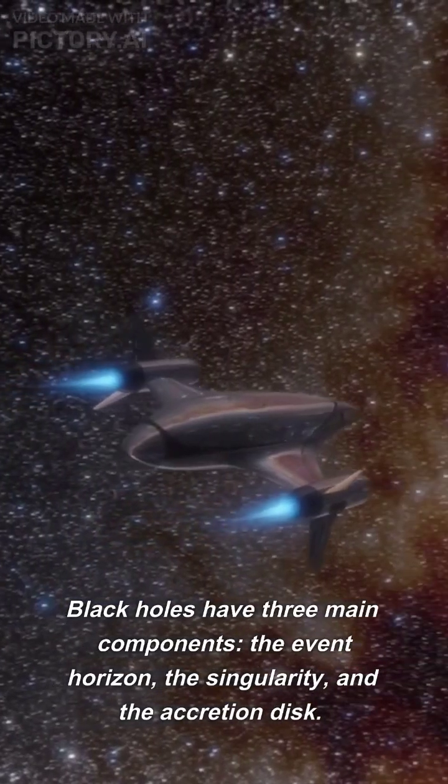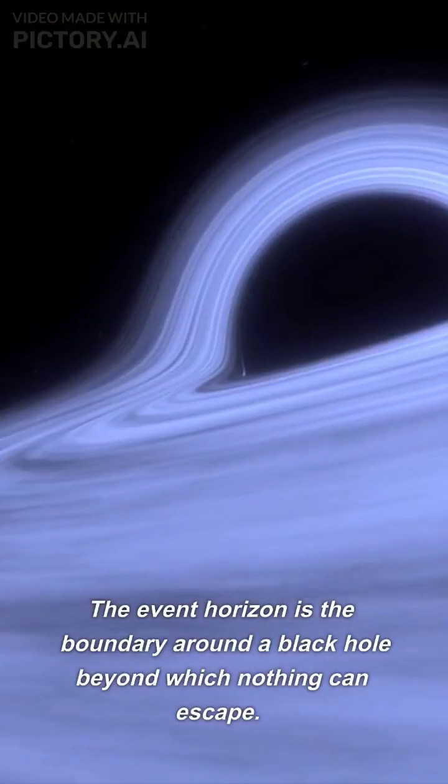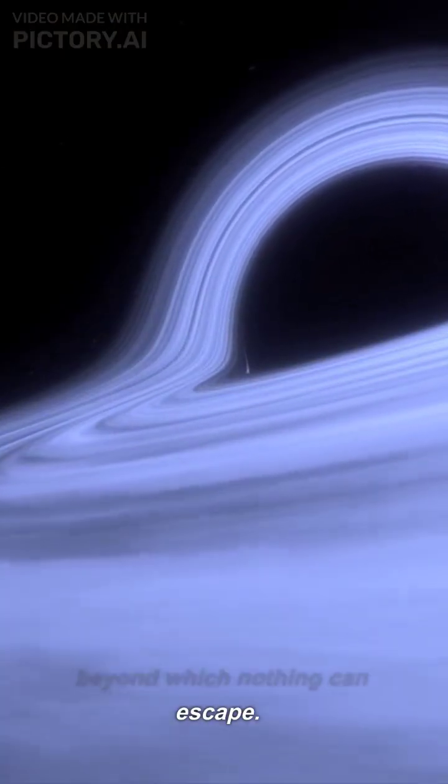Black holes have three main components: the event horizon, the singularity, and the accretion disk. The event horizon is the boundary around a black hole beyond which nothing can escape.